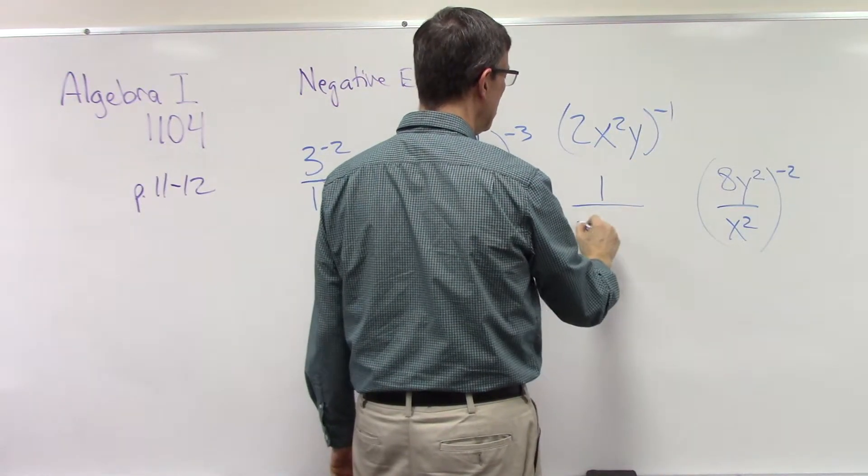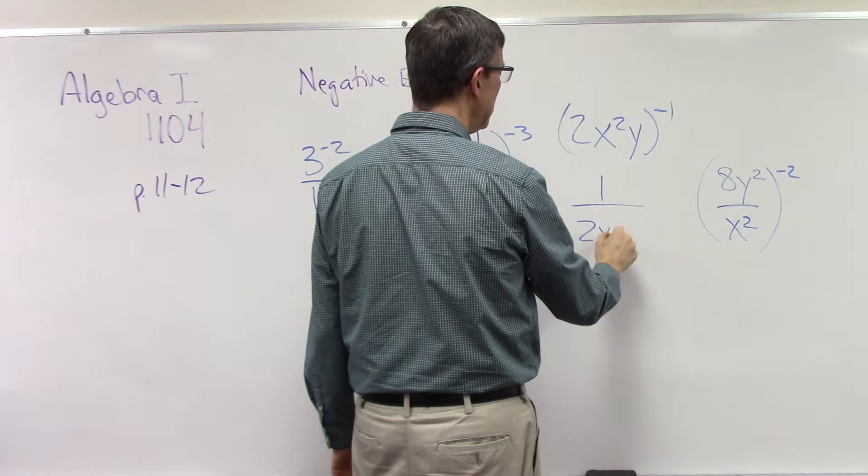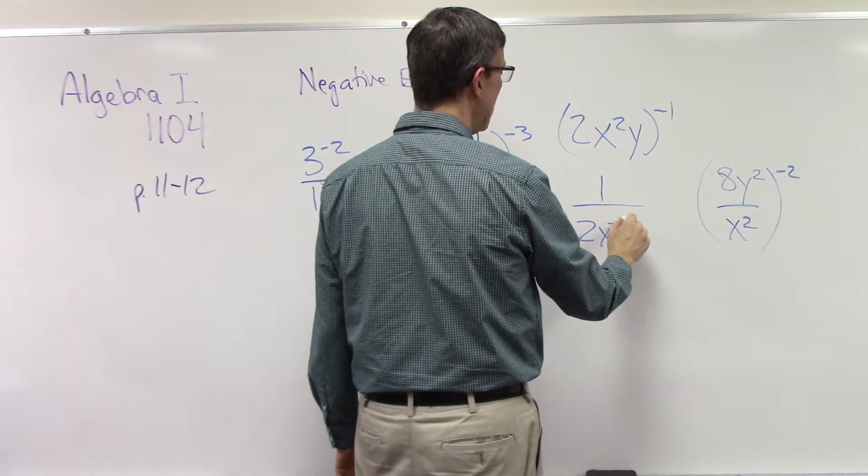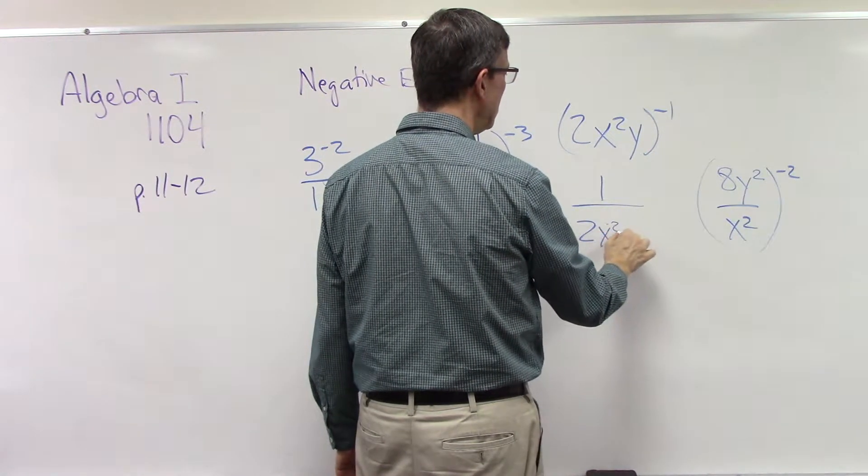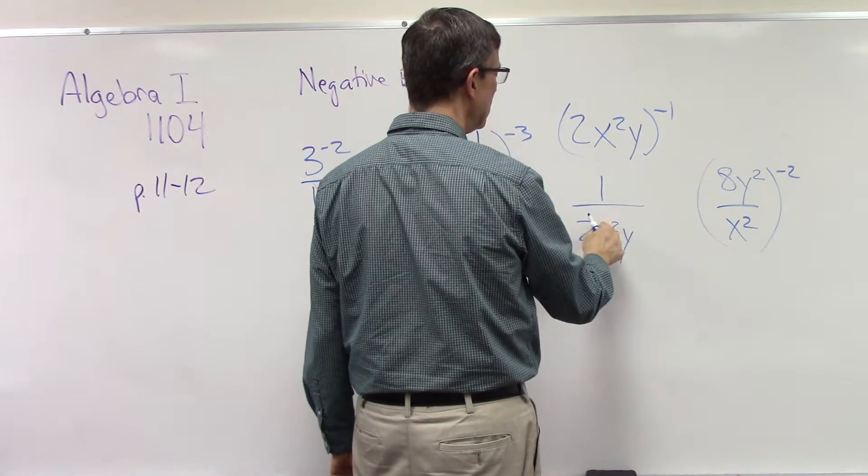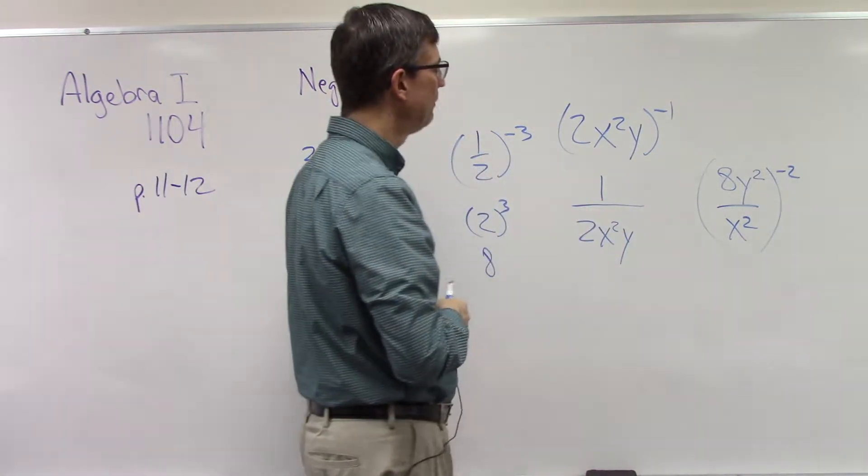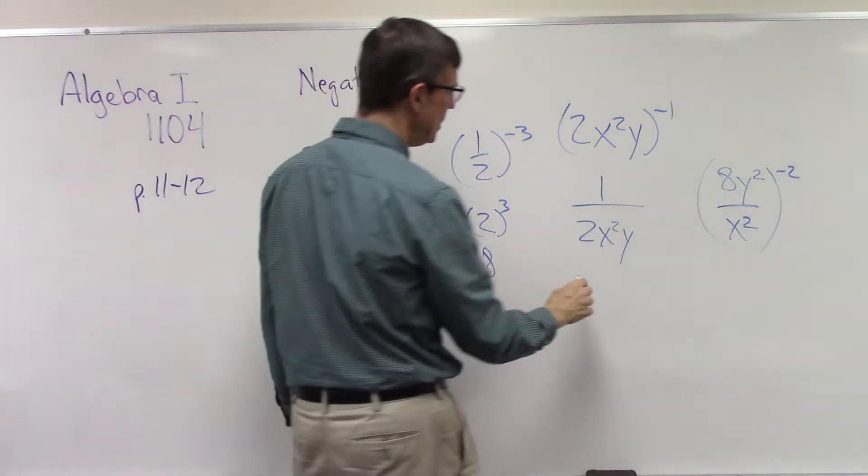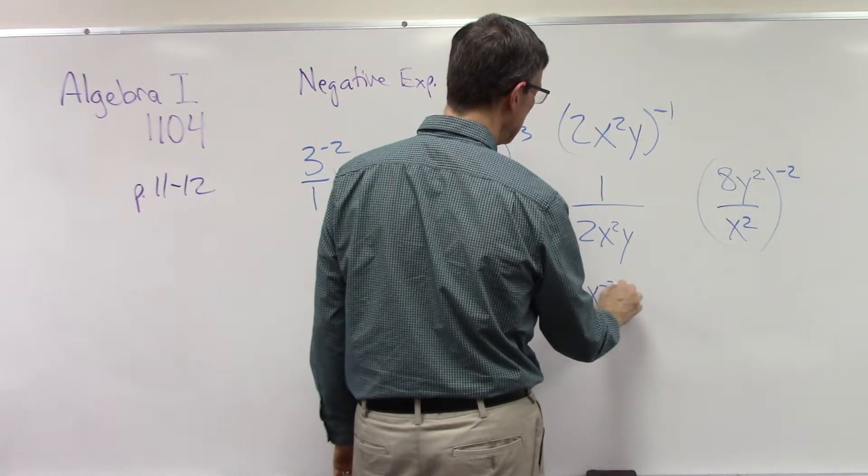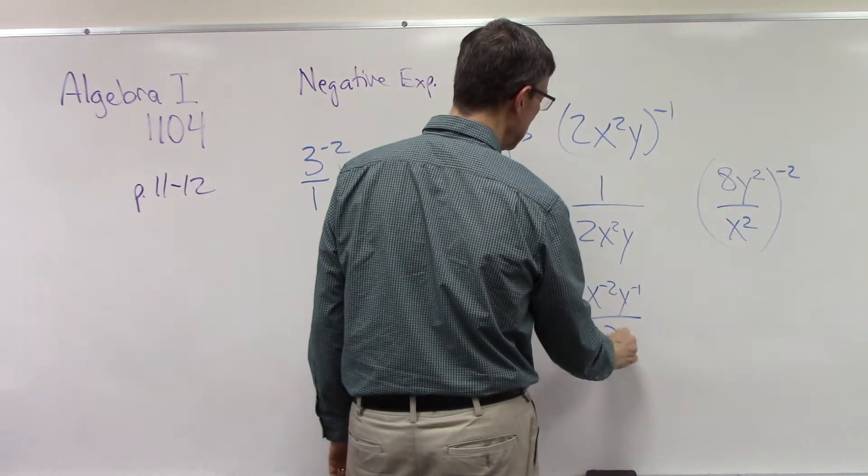This means that this whole thing drops to the denominator, so I get 2 in the denominator, X to the second power in the denominator, and Y in the denominator.